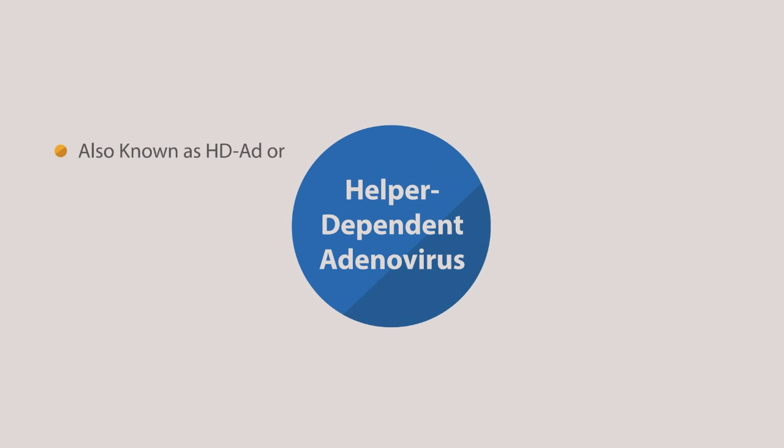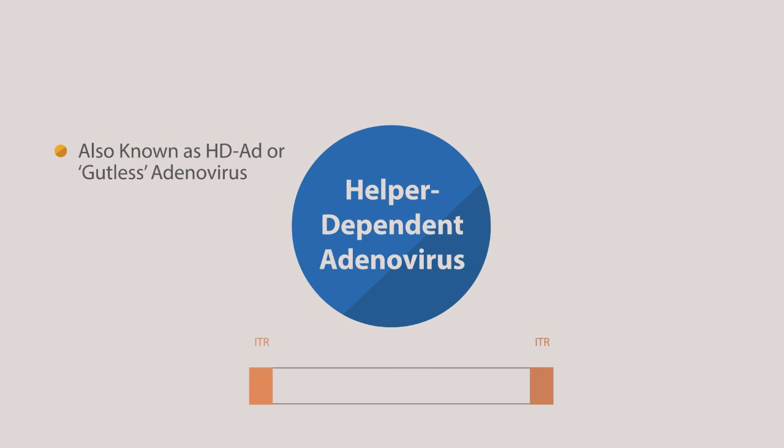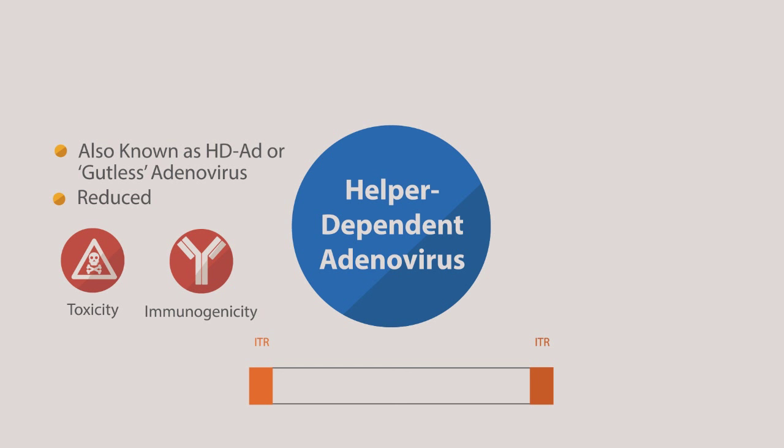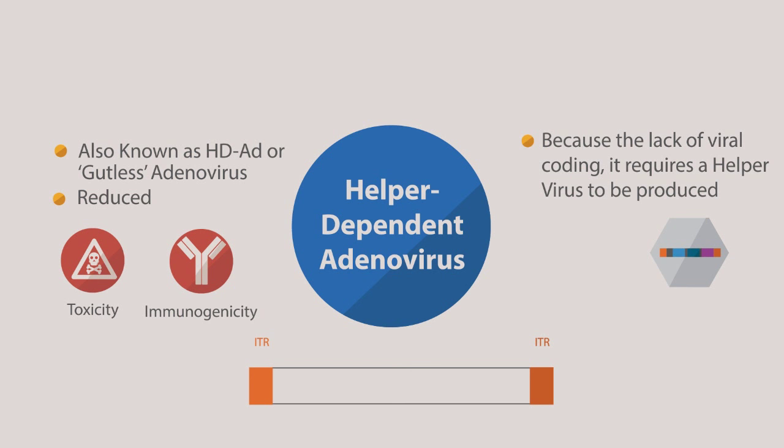Helper-dependent adenovirus, also known as HDAD vectors or gutless adenovirus vectors, have had all viral coding genes deleted. Therefore, HDAD vectors have greatly reduced toxicity and immunogenicity in vivo, enabling long-term transgene expression. Because they lack viral coding genes, they require a helper virus in order to be produced.